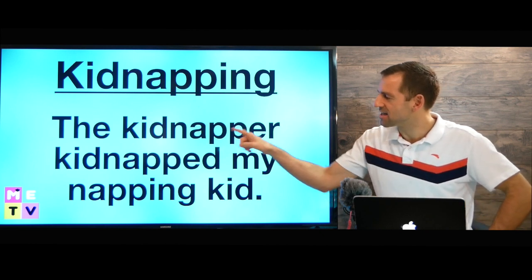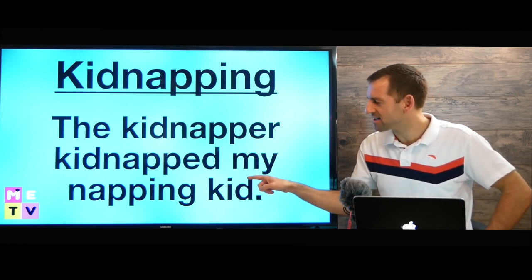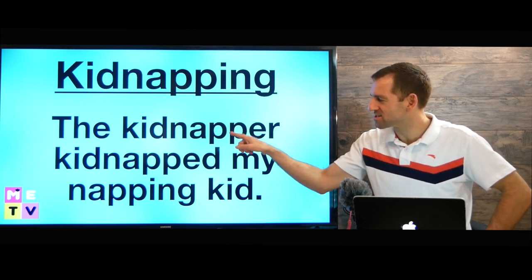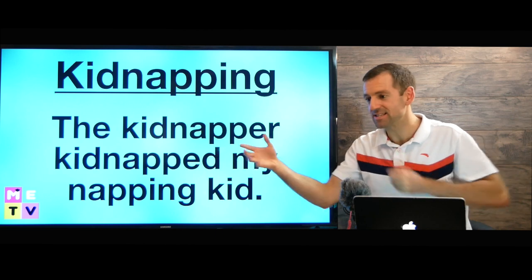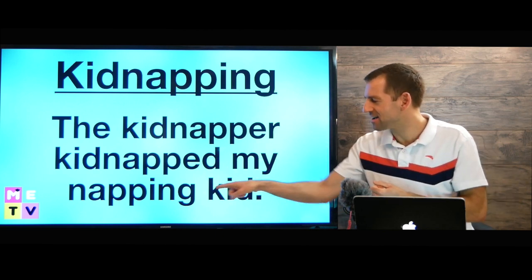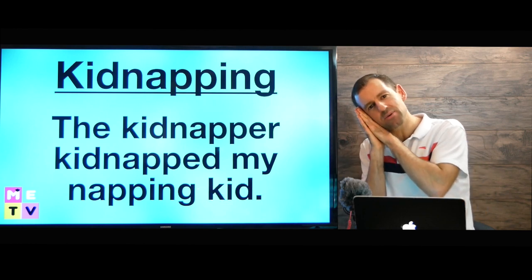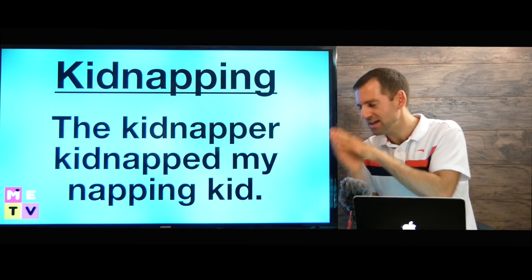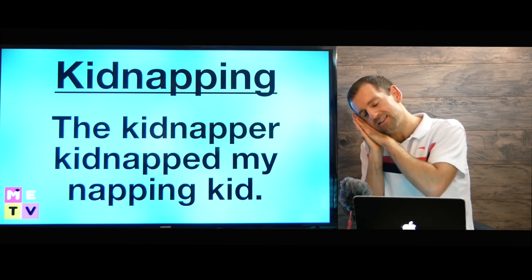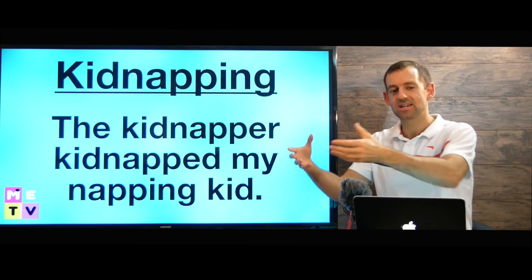So we could say this sentence: the kidnapper kidnapped my napping kid. The kidnapper — that's the person. He kidnapped — that's the action, the verb. He kidnapped my napping kid. Now, what does napping mean? Napping means sleeping in the day. So the kid was sleeping, maybe in a park or something like that. The kid was napping and the kidnapper kidnapped him.